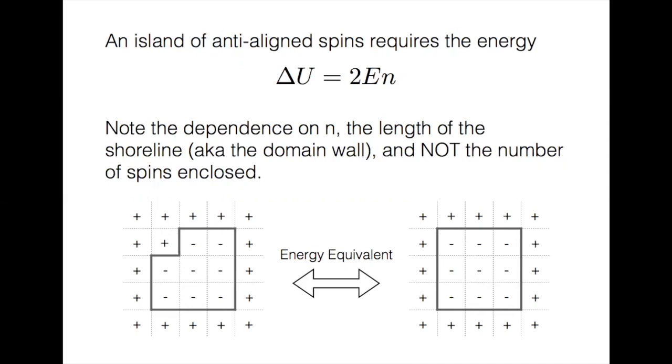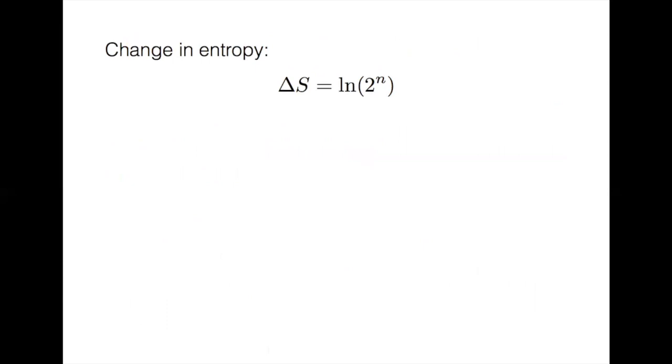The boundary of length n is an n-step closed path. A choice of two directions at each spin site is enough to guarantee a closed path. And thus, there are 2 to the n closed paths of length n.